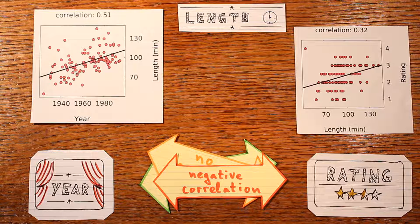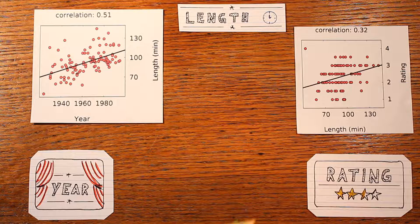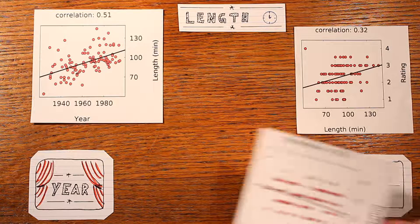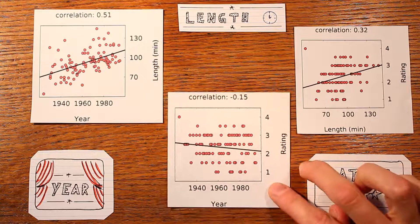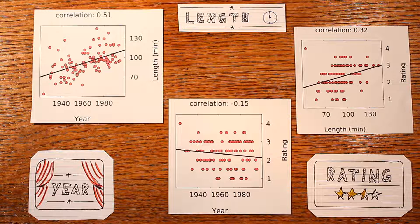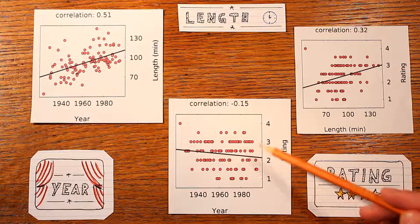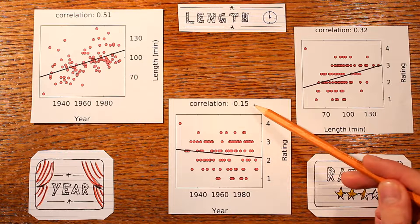Now the third scatter plot looks at the relationship between year and rating. You'd probably expect that to be positive as well, but as it turns out it's actually negative — it's minus 0.15. So that's pretty paradoxical.